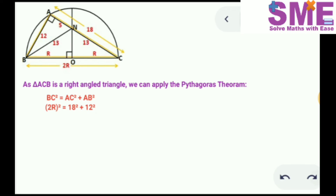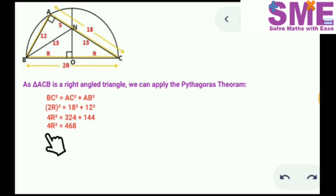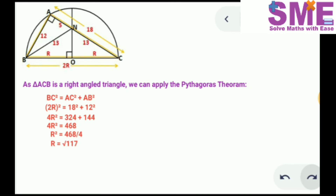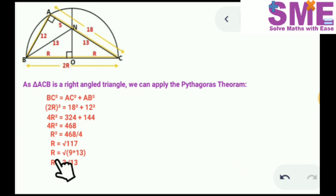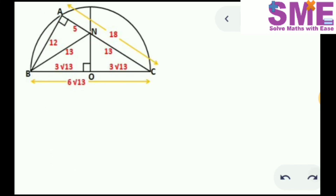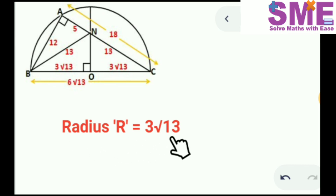So we get 4R² = 18² + 12² = 324 + 144 = 468. Therefore R² = 468 ÷ 4 = 117. Simplifying: R = √117 = √(9 × 13) = 3√13. Hence the radius R = 3√13.